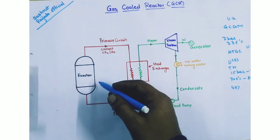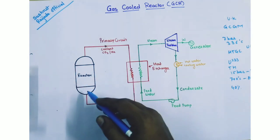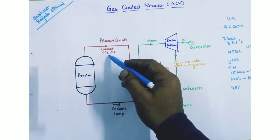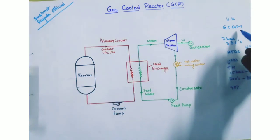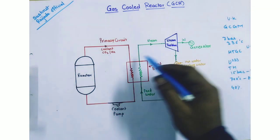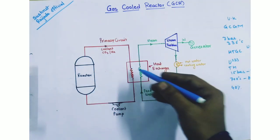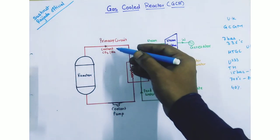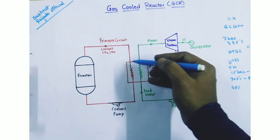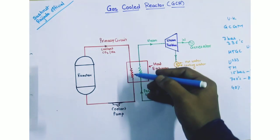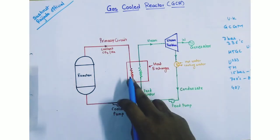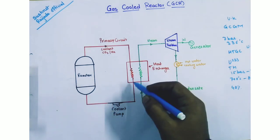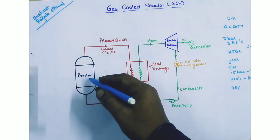In the diagram, this is the gas cooled reactor with a primary circuit in which the coolant — CO2 in the GCGM developed by UK, and helium in the HTGC — carries heat from the reactor and passes through the heat exchanger, which transfers heat to the feed water, and then circulates back towards the reactor.